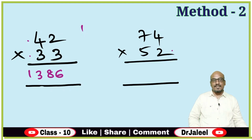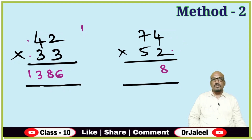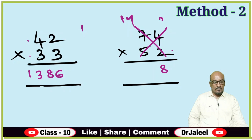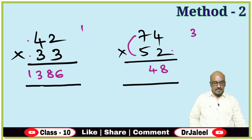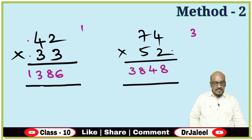Let us go for one more example — 52 × 74. Right side: 2 × 4 is 8. Cross multiplication: 2 × 7 is 14 and 5 × 4 is 20. 20 plus 14 is 34 — write 4 here and carry forward 3. Left side: 5 × 7 is 35, plus 3 carry forward is 38. So the answer is 3848.